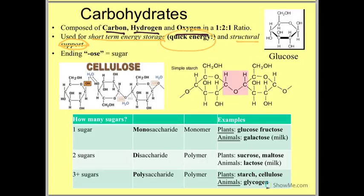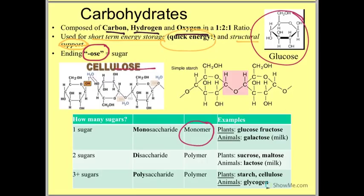You can sometimes recognize the name of a carbohydrate molecule because it ends in -ose. These three letters generally mean a sugar — like cellulose, glucose, fructose, or lactose. Our simplest sugar, like glucose (C₆H₁₂O₆), which we need to make energy, is called a monomer — because there's just one of it, one molecule. One sugar we also call a monosaccharide: mono meaning one, saccharide meaning sugar. We can find glucose and fructose in plants, and animals get galactose, another simple sugar, from milk.